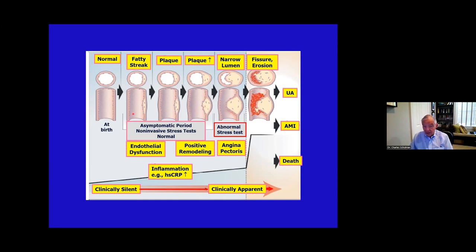You notice that early on, the lumen is not compromised because the plaque expands outward — so-called positive remodeling — and it's not until late in the course that it begins to narrow the lumen. During these periods, a stress test will be negative. Only at this point will it be positive. Angina pectoris occurs at this point, but in fact it probably occurs somewhat earlier.